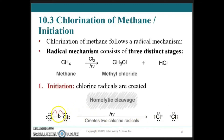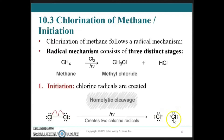Note that we have the single-barbed fishhook arrow. The arrow begins where the electron comes from — that is the shared pair — and it goes to the chlorine atom. So each chlorine atom now has an incomplete valence shell, but the charge of the electrons equals the charge of the protons, so they are not ions.